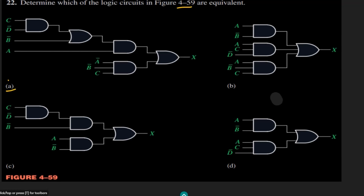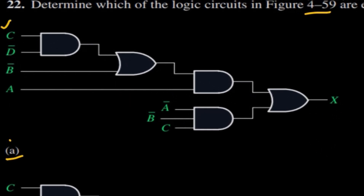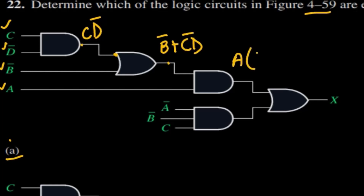Let me start with part A. In part A we have different inputs: C, D prime, B prime, and A. At the output of the first AND gate we have C·D prime. Then C·D prime and B prime are given to an OR gate, giving us B prime + C·D prime. This result and A are inputs to another AND gate.